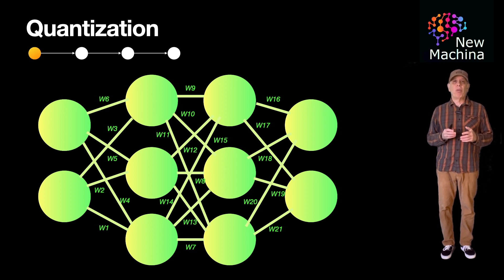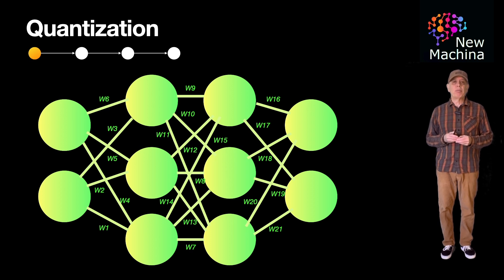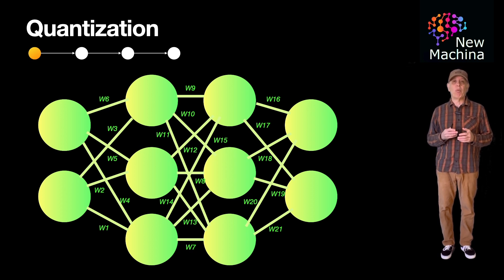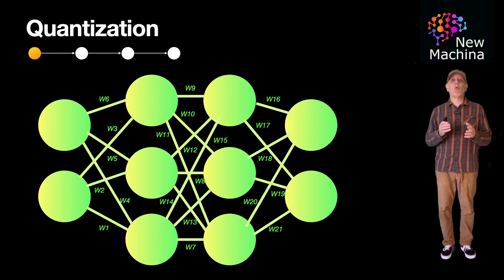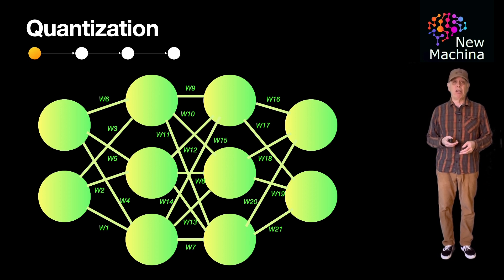I'm showing you this simple artificial neural network as these are the building blocks for today's large language models. LLMs today build on top of these simple artificial neural networks and take it much further with more advanced neural network architectures such as the transformer. Today, in addition to using more advanced neural network architectures, LLMs are just much larger, having many more parameters. LLMs can have billions of parameters, and in the case of frontier models, even hundreds of billions of parameters.